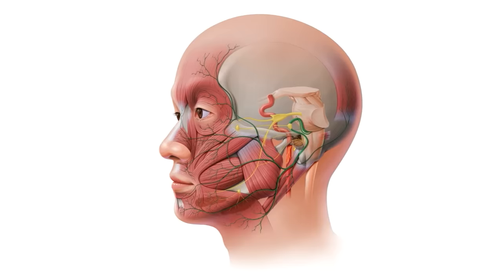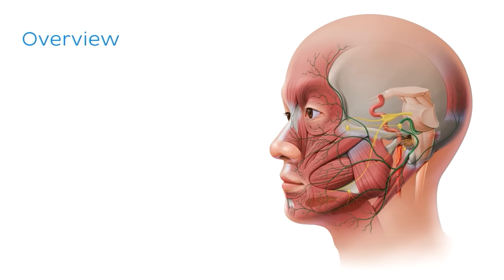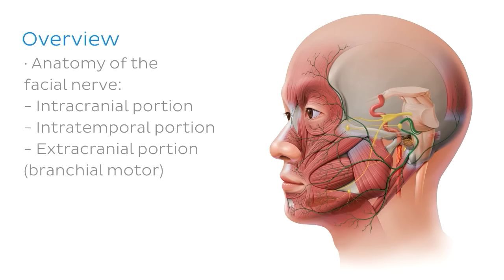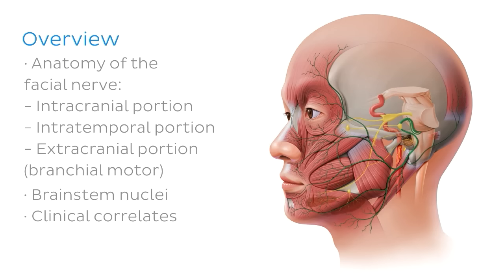We're going to cover the anatomy of the facial nerve, breaking it down medially to peripherally into an intracranial portion, an intratemporal portion, and an extracranial portion — noting that the extracranial portion can also be referred to as the branchial motor portion. We'll also talk about the brainstem nuclei associated with the facial nerve, and finally we'll end with some clinical correlations.